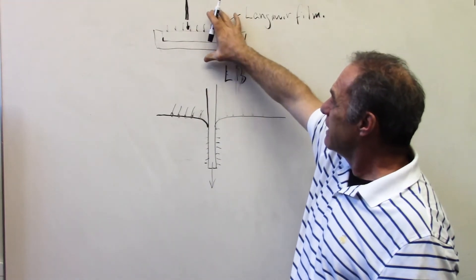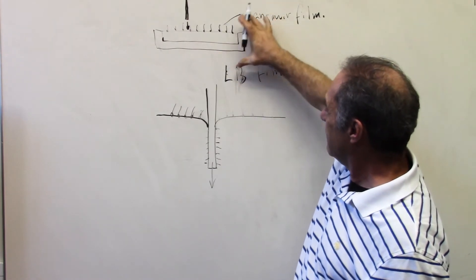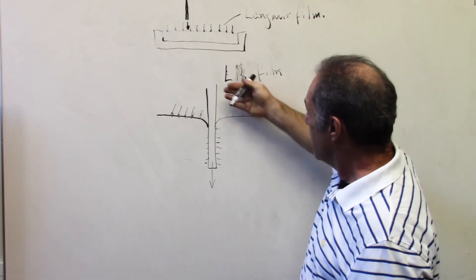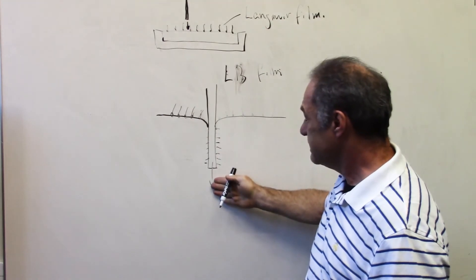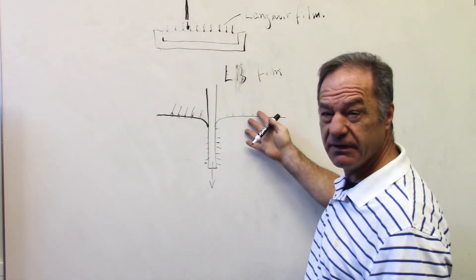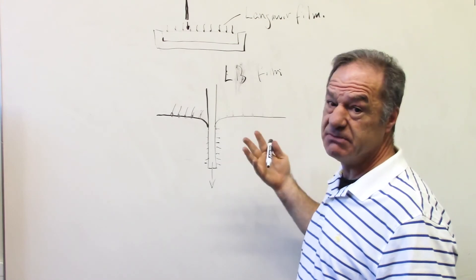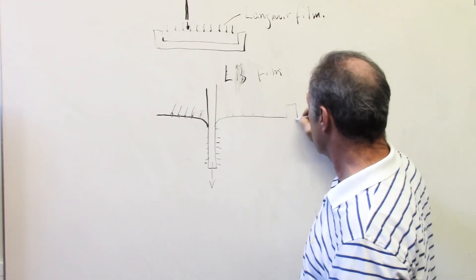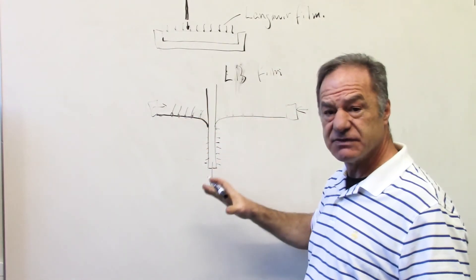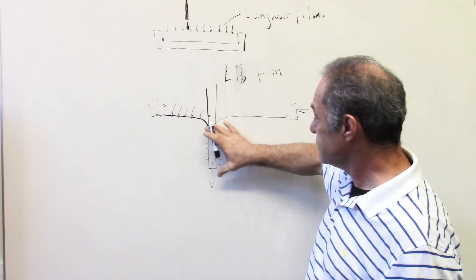Companies such as Myelin, when they produce a Langmuir trough with a Langmuir-Blodgett attachment, do something very important. When you make this deposition downward, you're removing material from the top Langmuir film, and so the surface pressure is diminishing. What they do is automatically compress the film during deposition to keep that surface pressure constant. They have a lot of control over the nature of this film.